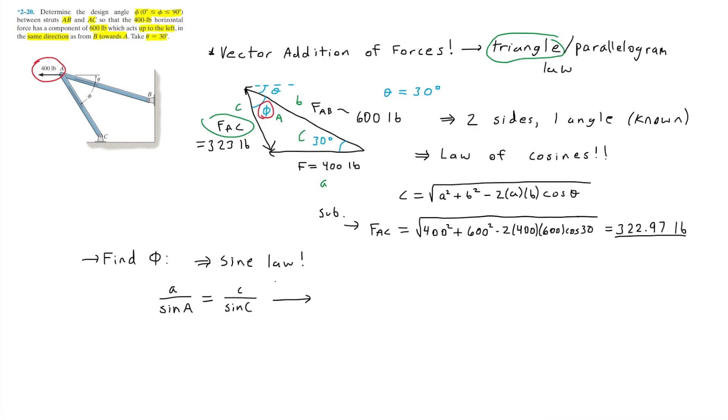Now substituting in the values, we have 400 divided by sine of phi equals 322.97 divided by sine of 30 degrees. Multiplying the sine phi to the other side, we have 400 equals, well, I'll simply divide out the fraction on the right.